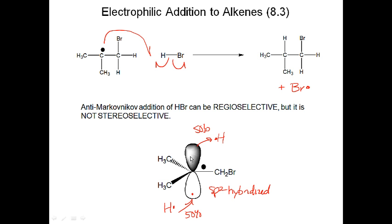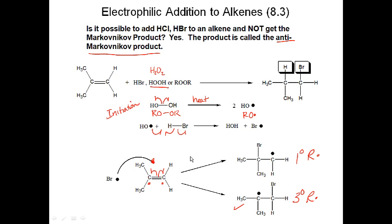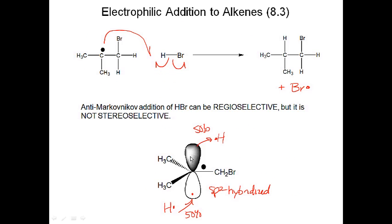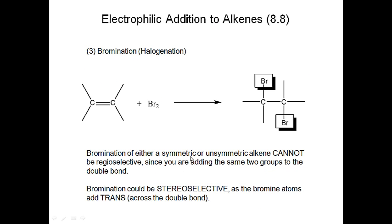I'll produce an equal mixture of two products. Anti-Markovnikov addition — when you have HBr and peroxide — gives the anti-Markovnikov product, but it finishes up the HBr and HCl addition discussion, since we can do either Markovnikov or anti-Markovnikov addition.